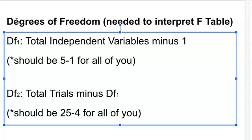For you, all of you, it should be 5 minus 1, because your independent variables would be the five different groups that you are testing. For example, the salt concentrations. So you would subtract 1 from 5, and you end up with a DF1 value of 4.